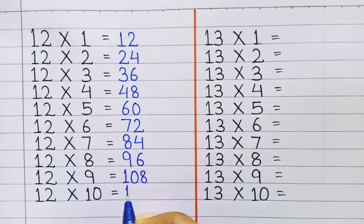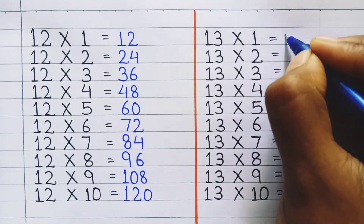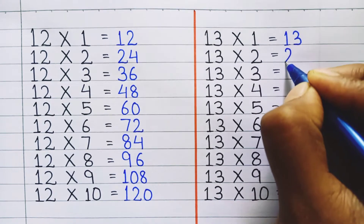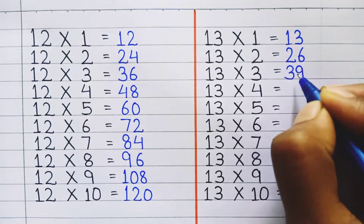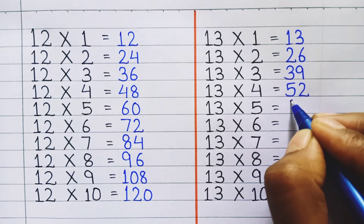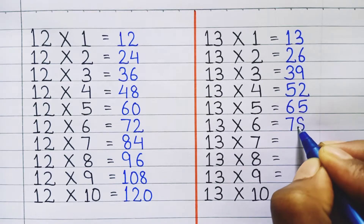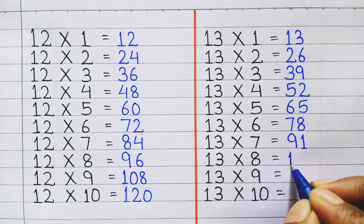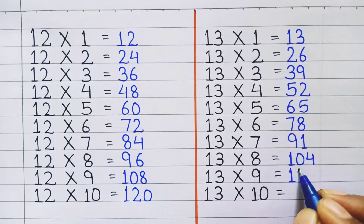12 ten's a 120. Table of 13: 13 one's a 13, 13 two's a 26, 13 three's a 39, 13 four's a 52, 13 five's a 65, 13 six's a 78, 13 seven's a 91, 13 eight's a 104, 13 nine's a 117.